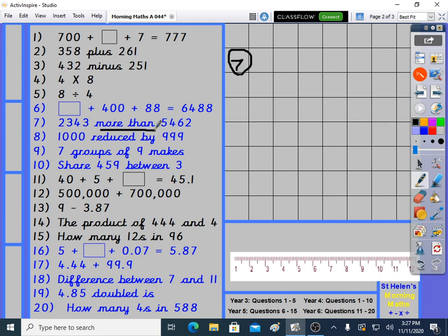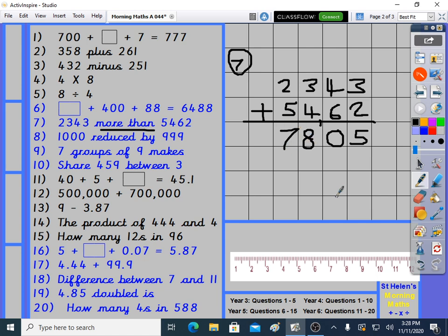Question 7: It says more than, which is plus. 2,343 more than 5,462. I put the biggest number at the bottom. Does it matter? It doesn't matter, no, because in plus you can put either number at the top. 3 plus 2, 4 plus 6, 3 plus 4 plus 1, 2 plus 5 is 7. 7,805 is our final answer.